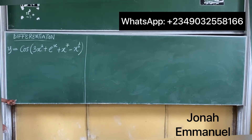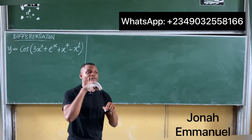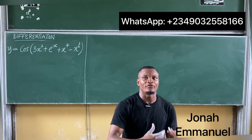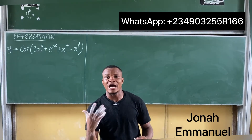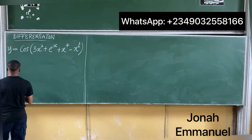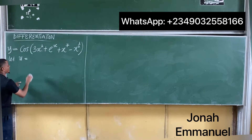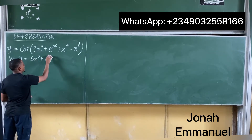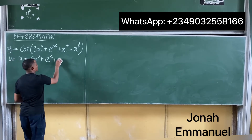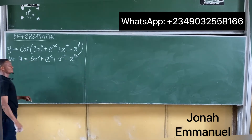Let's get this done. For this one, I'm using the chain rule. As I've said before, most cases involving transcendental functions require a chain rule approach. So for the chain rule approach, I will let u be equal to the term in brackets: 3x squared plus exponential x plus x to the power 7 minus x to the power 1 over 2.